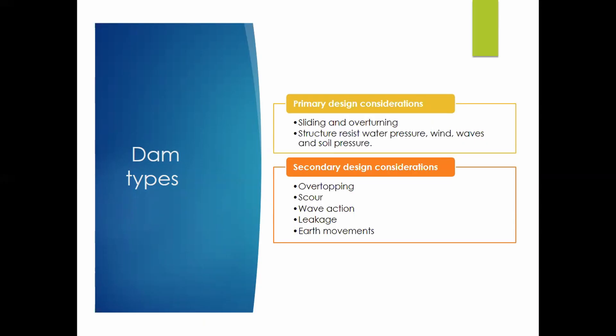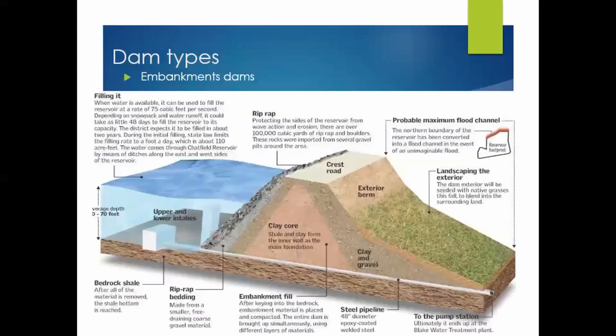Going into design considerations when choosing what dam to build, you have primary considerations: sliding and overturning, structural resistance to water pressure, wind waves and soil pressure. Secondary design considerations are overtopping, scour, wave action, leakage and earth movement - these also influence what type of dam you want to build.